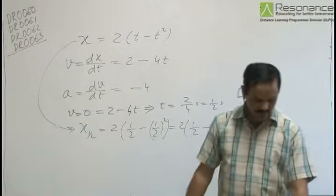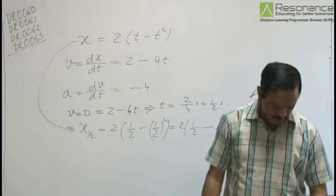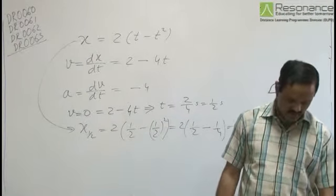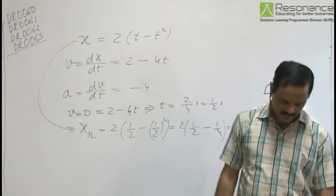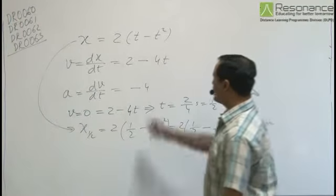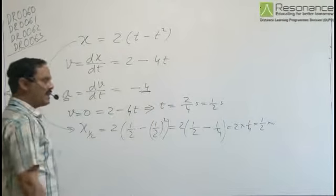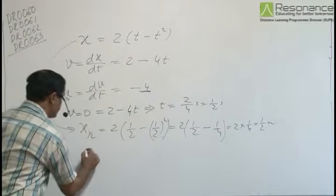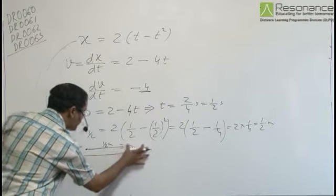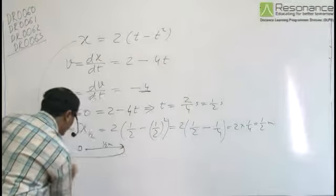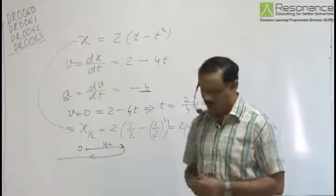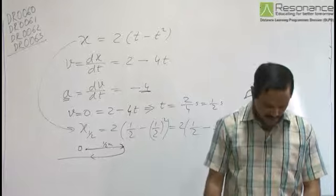The third question discusses the particle's trajectory: it starts from the origin, goes up to x = 0.5m on the positive x-axis, then moves left. The particle never goes to the negative x-axis initially, but as it continues to accelerate at -4 m/s², it starts from the origin, moves toward positive x by half a meter, then due to the opposing acceleration it starts moving in the negative direction and continues along the negative x-axis. So for the third question, option C is correct.